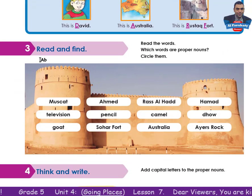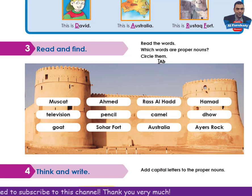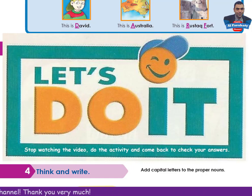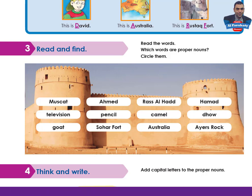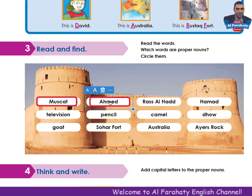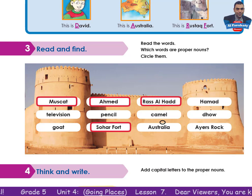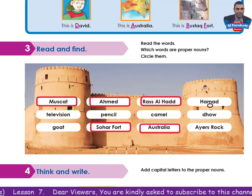Activity 3: read and find. Read the words — which words are proper nouns? Circle them. Take your time to circle the proper nouns, then come back to check your answers. Let me circle the proper nouns to check your answers. Mascot — yes, proper noun. Television — no. Ahmed — yes, proper noun. Pencil — no. Sohar Fort — yes. Ras Al Had — yes. Camel — no. Australia — yes. Hamad — yes.